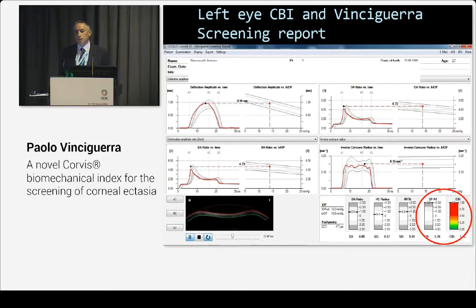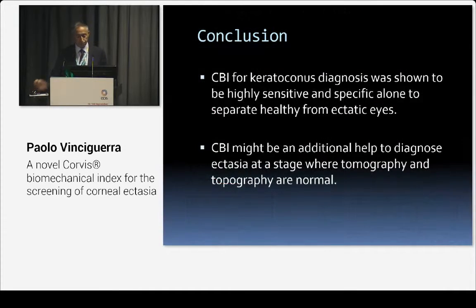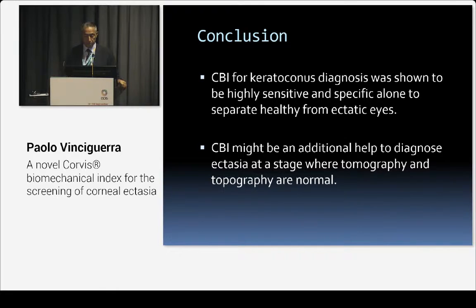We also have patients where we have the opposite: absolutely normal cases where only the Corneal Biomechanical Index is abnormal, and after further inquiry we discover that a brother or sister has keratoconus. So it is very important to have this double safety. Corneal biomechanics for keratoconus has been shown to be highly sensitive and specific alone to separate healthy from ectatic patients, and the Corneal Biomechanical Index can be an additional tool to diagnose ectasia at a stage where tomography and topography are absolutely normal.